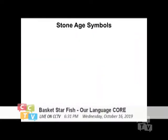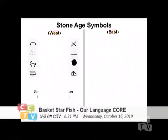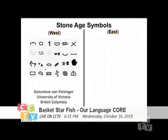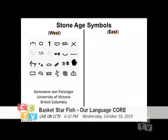First of all, I want you to look at some Stone Age symbols from the West and the East. There is a scholar in the West — I don't know how to pronounce her name, but you can Google her easily. She has done research on all the ancient caves in the whole of Europe. She summed up that there are some 32 symbols that Stone Age people were already using during the Ice Age. She said 26 of them are very commonly used.